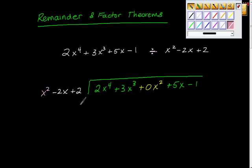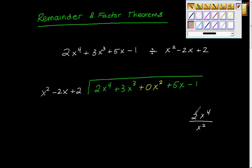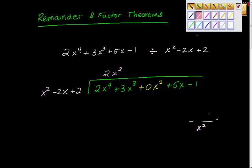This works exactly like long division worked when you were in 5th grade — all the rules are the same, we're just going to insert some variables. So the first thing we're going to do is 2x to the 4th divided by x squared. It's the green 2x to the 4th divided by this pink x squared — this piece divided by this piece — and we should get 2x squared. So the answer here is 2x squared. That's how I got that piece right there.